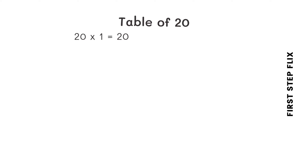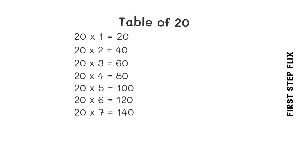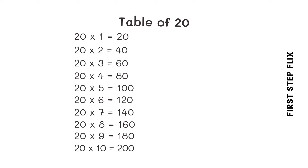20 ones are 20. 20 twos are 40. 20 threes are 60. 20 fours are 80. 20 fives are 100. 20 sixes are 120. 20 sevens are 140. 20 eights are 160. 20 nines are 180. 20 tens are 200. 20 elevens are 220.